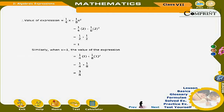Similarly, when x = 1, the value of the expression = 1/(4×1) + 1/(8×1²) = 1/4 + 1/8 = 3/8.